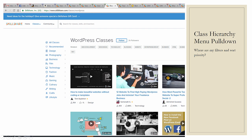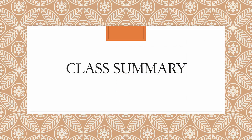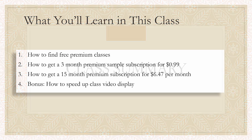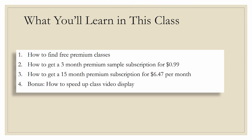I use search — it's easy. If I want self-publishing, SEO, whatever it is, just type it in the search field and refine. Now, a summary of both this lesson and this class: what you'll learn in the rest of this class is how to find premium free classes, how to get a three-month premium sample subscription for 99 cents, how to get a 15-month premium subscription for as little as $6.47 per month — that's almost half price. And as a bonus, I'll show you how to speed up class video so you can watch a video in half the time.